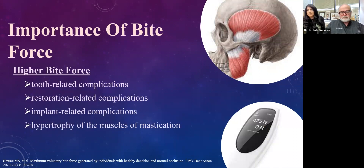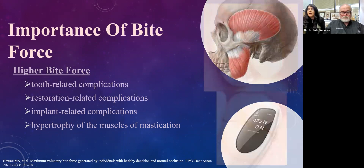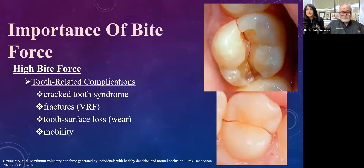When we look at higher bite forces, the complications that may arise include tooth-related complications, restoration-related complications, and implant-related mechanical or technical complications documented in the literature. There is also hypertrophy of the masticatory muscles, sometimes unilateral, potentially leading to facial asymmetry. Patients with high bite forces often present with cracked tooth syndrome — one tooth is dealt with and then another appears.